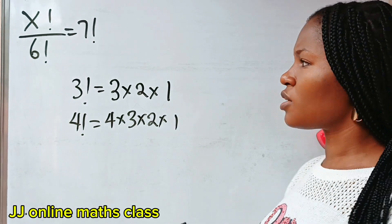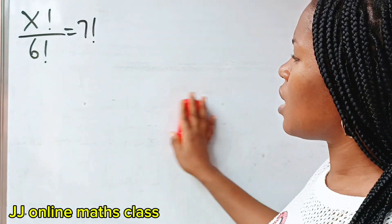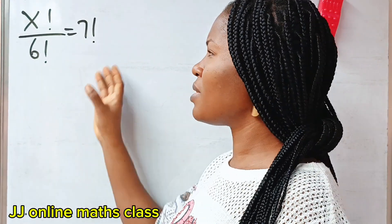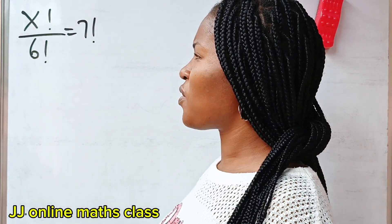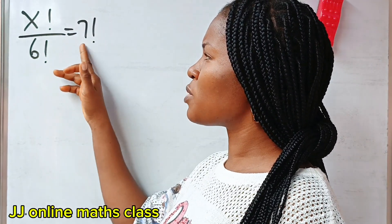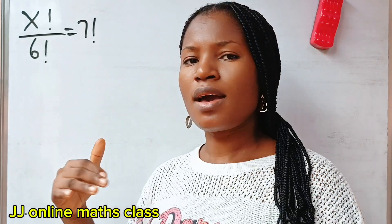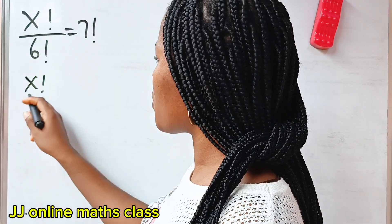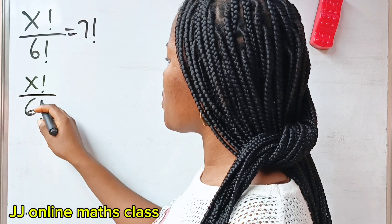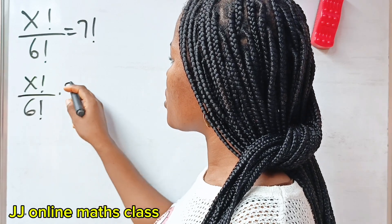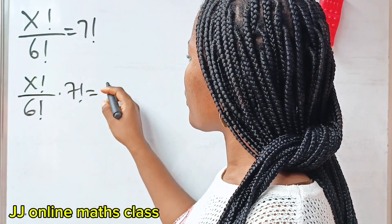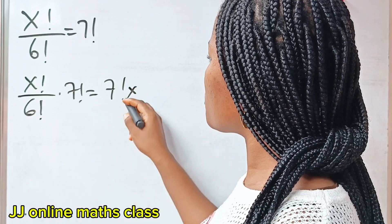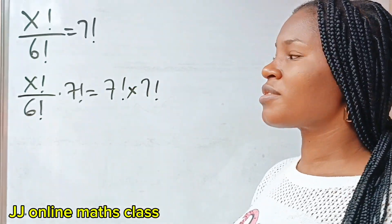So that is actually what factorial stands for. Now, if we want to implement that here, then that means that this question — first of all, let us multiply both sides of this equation by 7 factorial. So we have x factorial divided by 6 factorial multiplied by 7 factorial is equal to 7 factorial multiplied by 7 factorial.